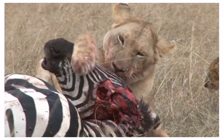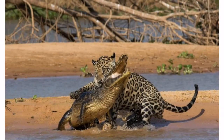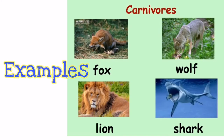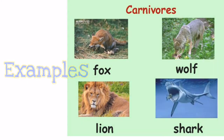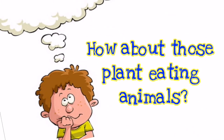Examples include a lion eating a zebra and a tiger eating a crocodile. Some examples of carnivores are fox, wolf, lion, and shark.